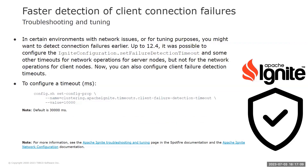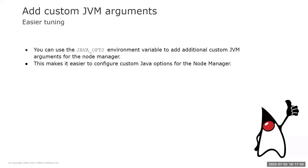Within environments that present network issues, or just when you need to detect failures earlier or for easier tuning, you may want to configure some timeouts. Up to Spotfire 12.4 it was possible to configure the Ignite failure detection timeout and some other timeouts. We have now added configurable timeouts for client failure detection operations as well. Additionally, one feature previously available in the server is now available in the Node Manager: you can use the Java opts environment variable to add additional custom JVM arguments to the Node Manager, making it easier to configure custom Java options for your Spotfire services.